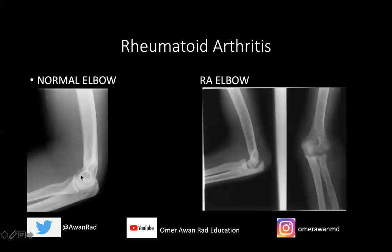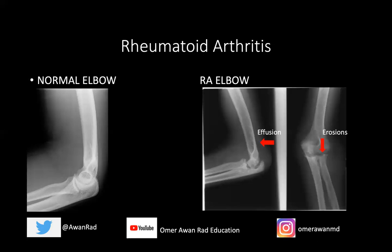Looking at a normal elbow: the radiocapitellar joint between the radius and capitellum, and the trochlear-ulnar joint between the proximal ulna and trochlea, are both normal — no joint space narrowing, no erosions, no effusion. Contrasting to an elbow with rheumatoid arthritis: there's a triangular dark lucency representing a joint effusion with a visible posterior fat pad sign, and soft tissue swelling. The radiocapitellar joint shows an undulating, eroded subarticular bone surface — loss of bone. The radial head appears ill-defined and irregular, as does the trochlear-ulnar joint. These are all erosions — another classic hallmark finding of rheumatoid arthritis.